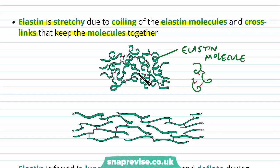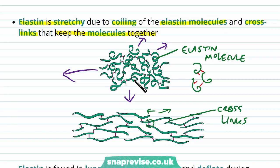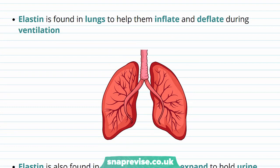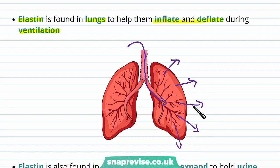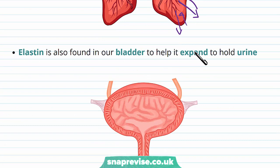If this tissue is pulled from either end and stretched out, all of the elastin is stretched but not broken apart, because the cross-links keep the tissue together. This means the tissue is intact both when recoiled and when stretched. Elastin is found in the lungs to help them inflate and deflate during ventilation — as we breathe in, the tissue surrounding the alveoli expands, and as we exhale it recoils to push air back out.